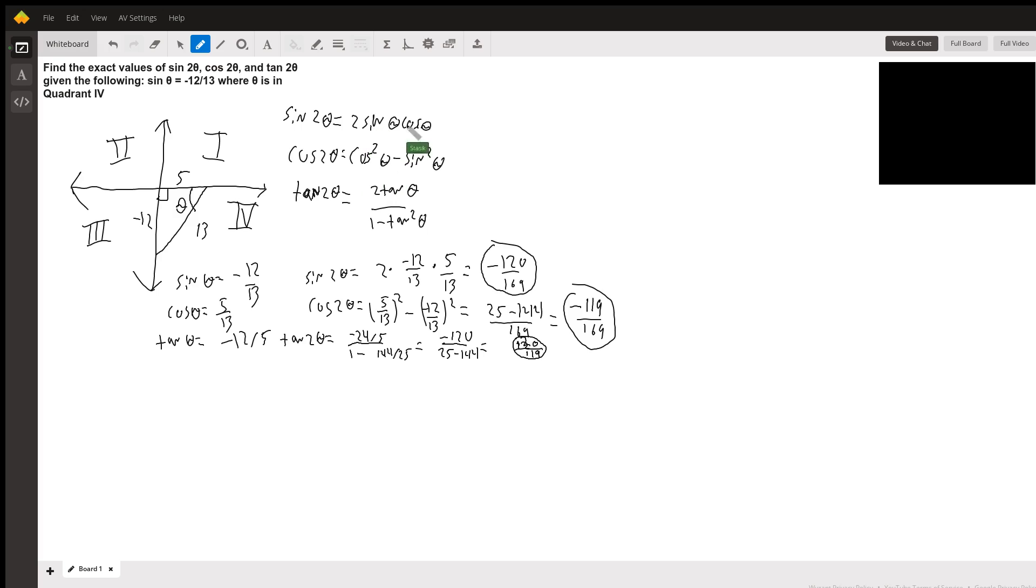For example, sin(2θ) = 2 × (-12/13) × (5/13) = -120/169. Cos(2θ) = (5/13)² - (-12/13)².